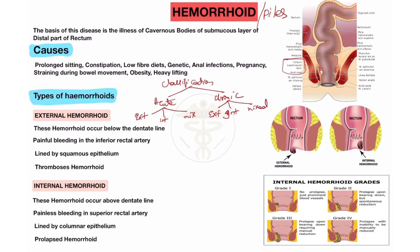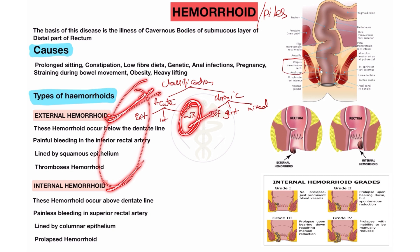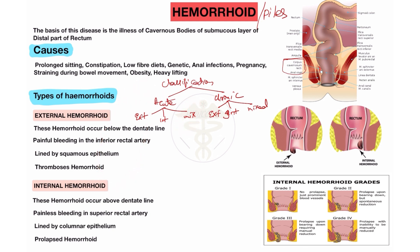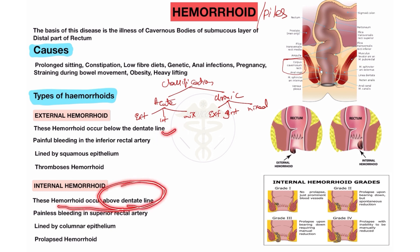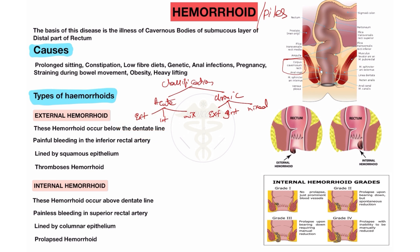In this video I will discuss external hemorrhoid and internal hemorrhoid — what is the difference between them. In the mixed type, both external and internal hemorrhoid occur in the patient. External hemorrhoids occur below the dentate line, and internal hemorrhoids occur above the dentate line. So when a hemorrhoid occurs below the dentate line, it is definitely an external hemorrhoid; if above the dentate line, it is an internal hemorrhoid.